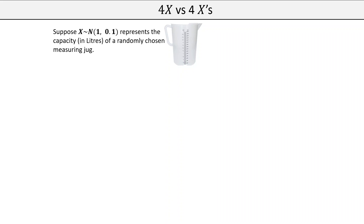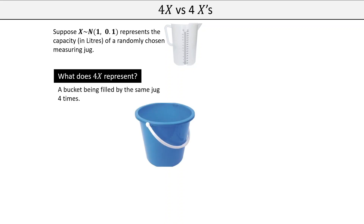To illustrate, think about a 1-litre jug with measurement markings. The manufacturing company tries its best to be accurate, but there is some variability — mean capacity 1 litre, variance 0.1 litres. Now, 4X would represent getting one jug and filling a bucket four times with the same jug. If there's any error, that error is duplicated every single time. Mathematically: Var(4X) = 4² · Var(X) = 16·Var(X).